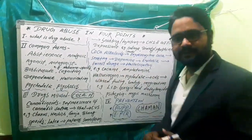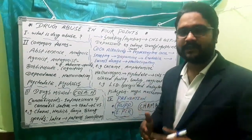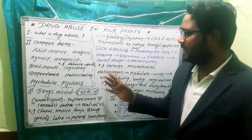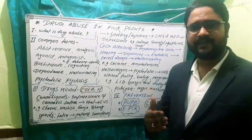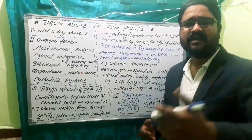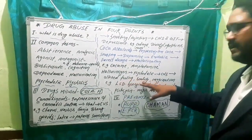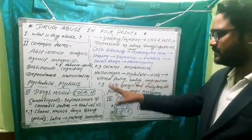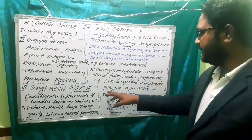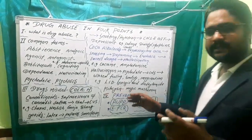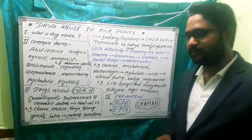H for Hallucinogens — these drugs bring our mental state to psychosis, causing us to lose perception of reality, space, and activities. Common examples include LSD (lysergic acid diethylamide), and psilocybin, which comes from a mushroom called the magic mushroom.